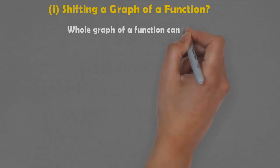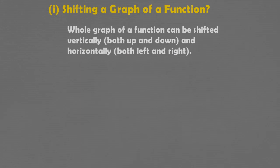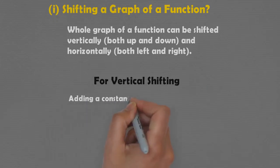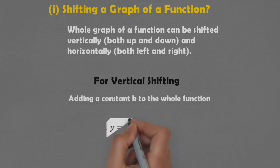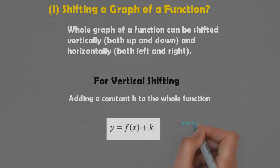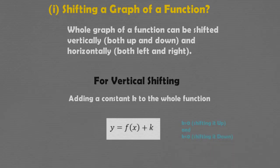Shifting of a graph basically means that the whole graph of the function can be shifted vertically — both up and down — and horizontally, both left and right. For vertical shifting, adding a constant k to the function, that is y = f(x) + k: if k is greater than 0, the graph shifts up by k units, and if k is less than 0, the graph shifts down by k units.